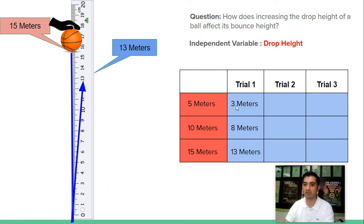And then what we're measuring, these blue measurements, the three meters, eight meters, and 13 are the dependent variable, which is called the bounce height.